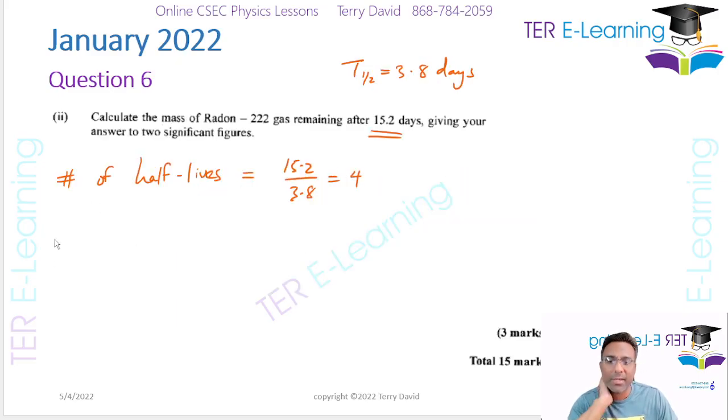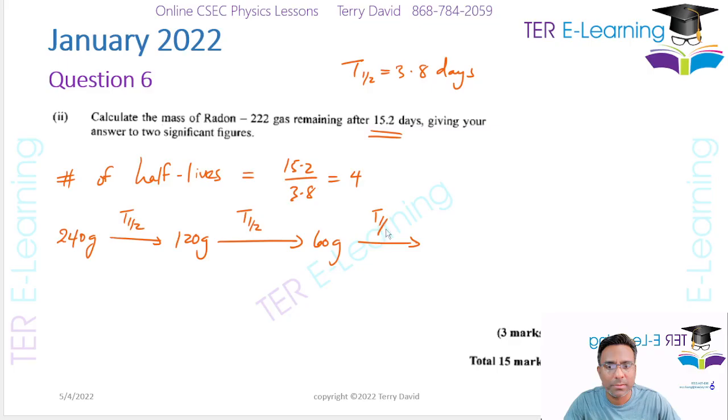So what we're going to do, we're starting off with 240 grams. So after one half-life, you're going to have half that amount which is 120 grams. So that's one half-life gone. Then we're going to go for a next half-life, half of that is going to be 60 grams. Then we're going to go for our next half-life, and you're going to half of that so that's 30 grams. So that's three half-lives gone, but we're trying to go over a period of four half-lives. So we need to divide this again, and this is going to give you 15 grams. So the question said give your answer to two significant figures. So the mass that they're looking for at the end is going to be 15 grams.